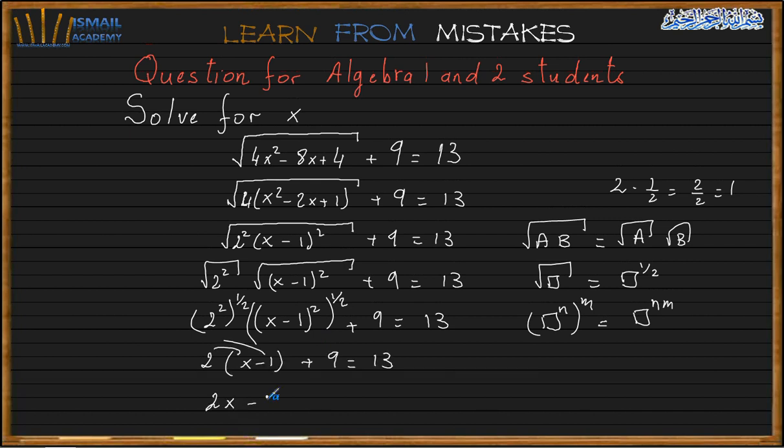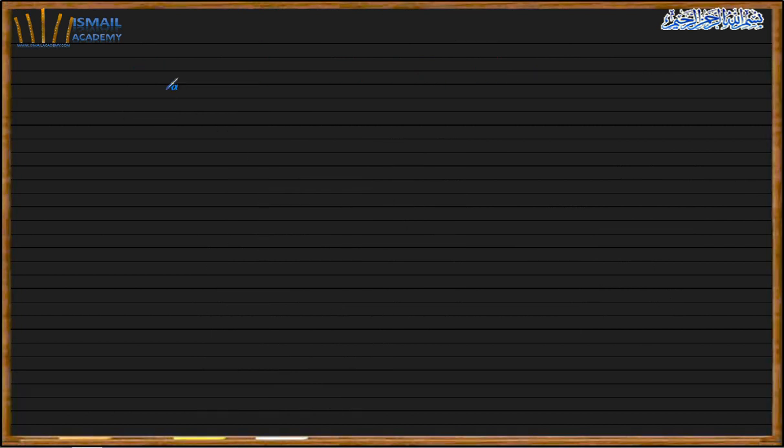Minus 2 plus 9 equal here. Let me write it here. 2x minus 9 equal here. So it's going to be 2x plus 7 equal 13.